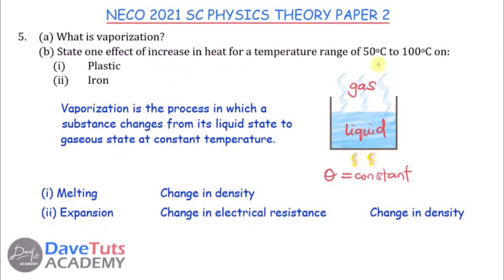For the effect of increasing temperature from 50°C to 100°C: for plastic, it will melt because that is above its melting point, resulting in a change in density. For iron, since that temperature does not reach its melting point, it will only expand, and there will also be changes in its electrical resistance and density.